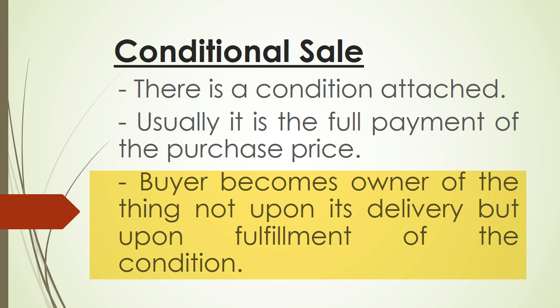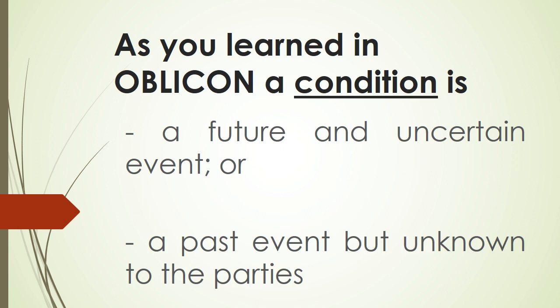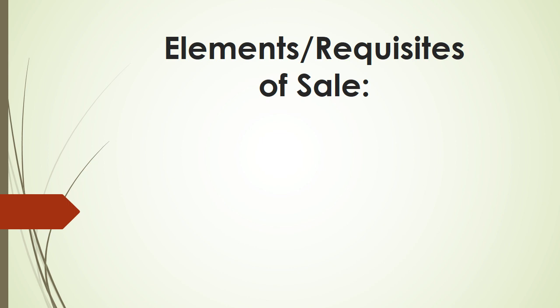In a conditional sale, the buyer becomes the owner of the object not upon its delivery but upon fulfillment of the condition. As you learned in your Obligations and Contracts, a condition is either a future and uncertain event — for example, the full payment of the price — or a past event unknown to the parties.